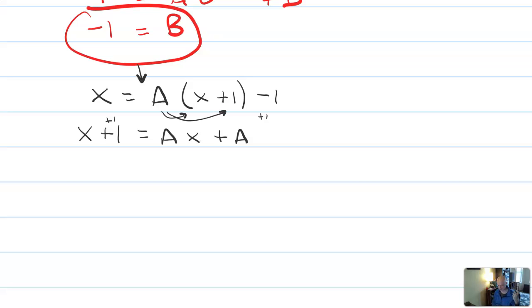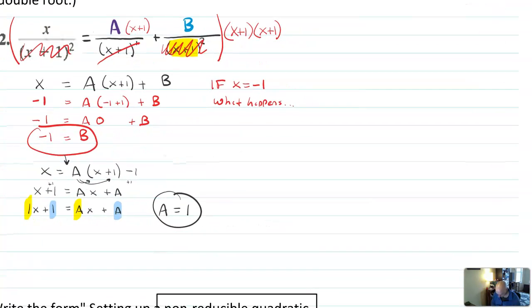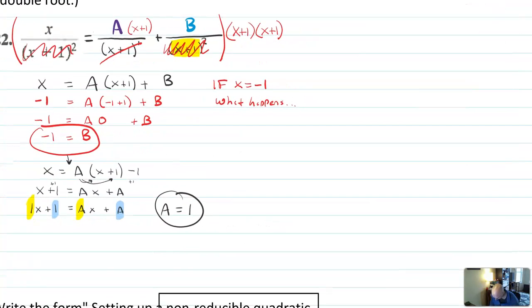And now I can look at the parallel structure. So if I have one x plus one equals a x plus a, parallel structure says that a had darn well better equal one.